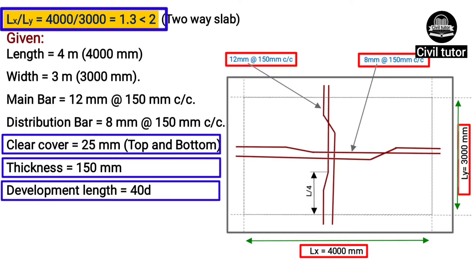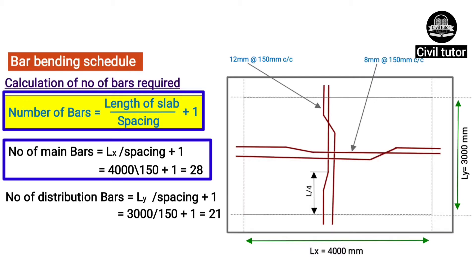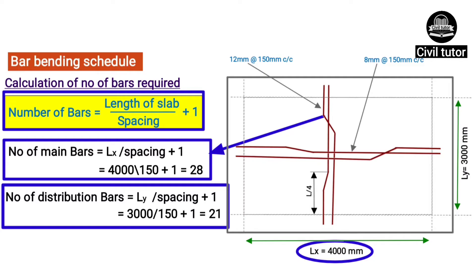The ratio of LX to LY is 4000 upon 3000, which equals 1.3 — less than 2 — confirming this is a two-way slab. The number of bars is given by: length of slab divided by spacing, plus 1. So the number of main bars equals LX upon spacing plus 1, giving 28 bars. The number of distribution bars equals LY upon spacing plus 1, giving 21 bars.